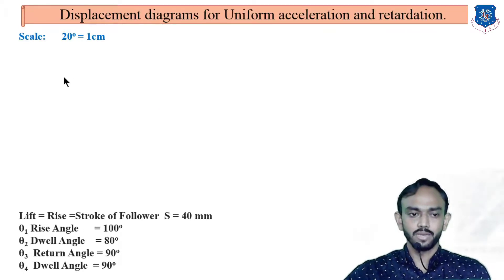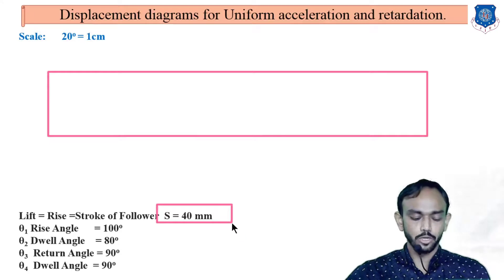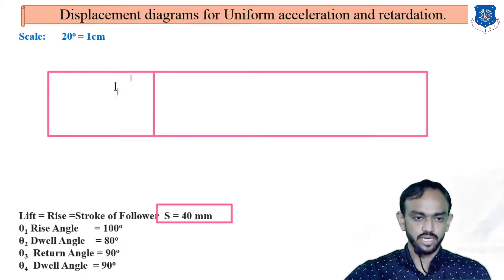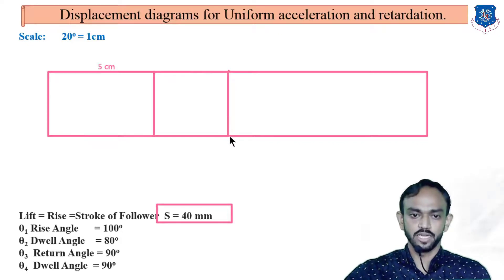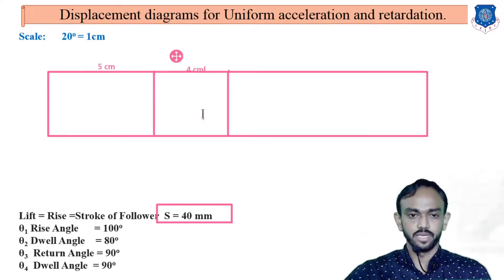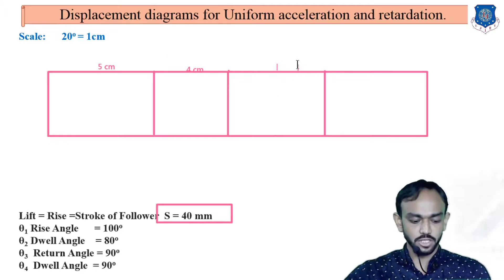For the uniform acceleration diagram, you divide the rectangle into four parts depending on the angles. First angle is 100 degrees, which means 5 cm. After that, the second part: 80 degrees — since 20 degrees equals 1 cm, 80 degrees equals 4 cm. After that, 90 degrees equals 4.5 cm, and 4.5 cm again. That's how you complete the four partitions of this rectangle.